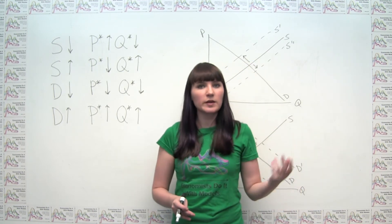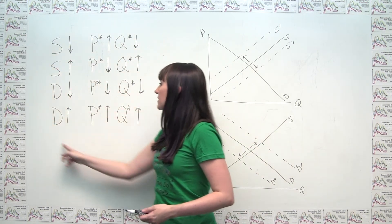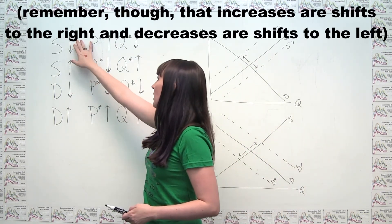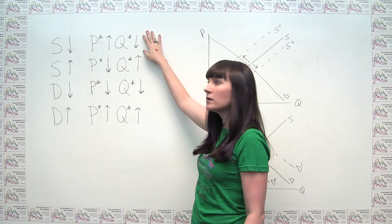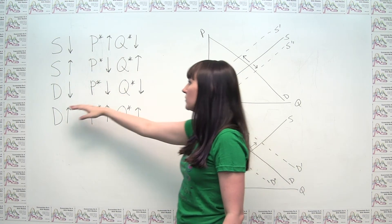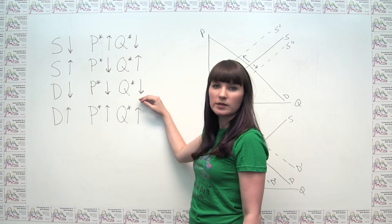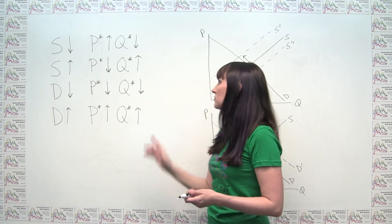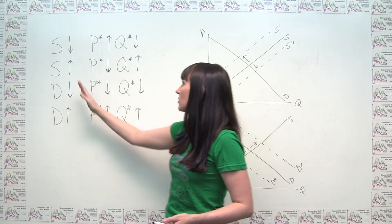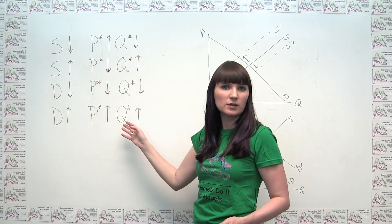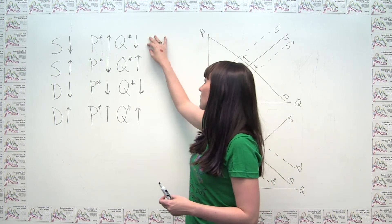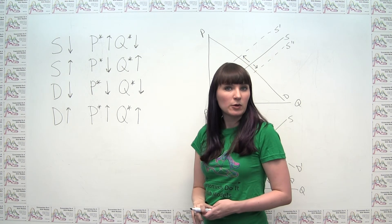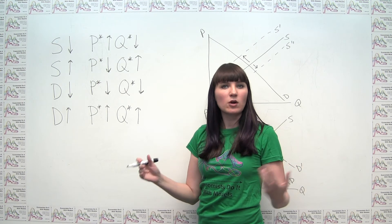There are two general things helpful for solving this sort of problem. First, I've summarized the results of different types of shifts and their effect on price and quantity: a decrease in supply increases equilibrium price and decreases quantity; an increase in supply decreases price and increases quantity; a decrease in demand decreases price and decreases quantity. You could memorize these four conditions and work forward from a known shift to predict price and quantity, or work backwards from observed changes to identify what shifted. Though I don't generally recommend memorization — you can always draw the pictures.